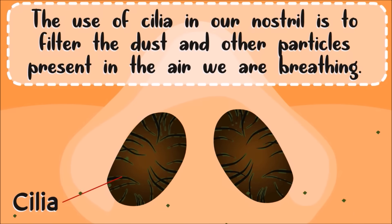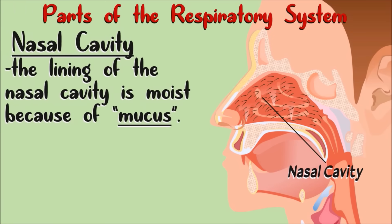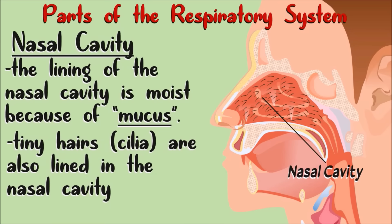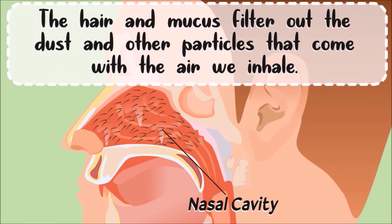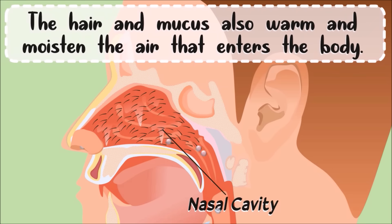This is the nasal cavity. The lining of the nasal cavity is moist because of mucus. Tiny hairs, or cilia, are also lined in the nasal cavity. The hair and mucus filter out the dust and other particles that come with the air we inhale. The hair and mucus also warm and moisten the air that enters the body. We normally breathe through our nose and not through our mouth.